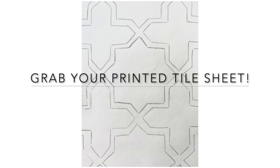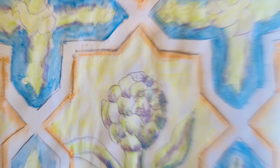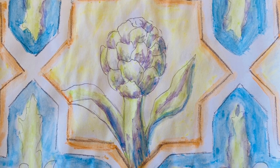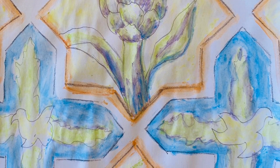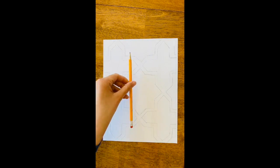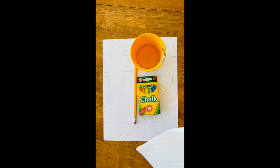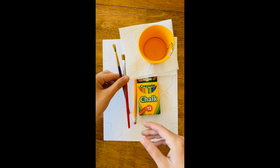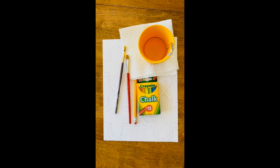Okay artists, grab your printed template of the zellige tile that I drew out for you guys, and we are going to start to add more patterns and color. You're going to need a pencil, chalk, water, paper towel, and some paintbrushes. And if you have some watercolors already, you could use that instead of the chalk.